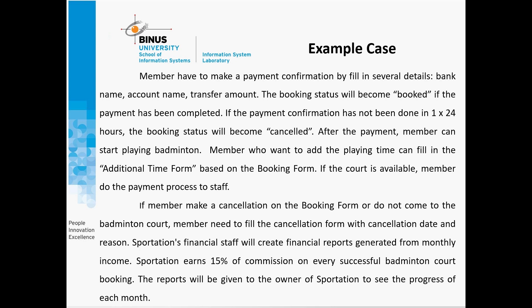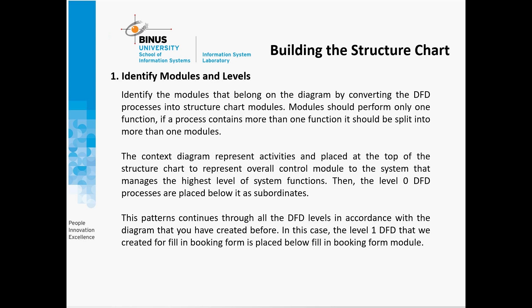The following is an example case of a support session. There are three steps to building a structure chart. First, identify modules and levels — identify the modules that belong on the diagram by converting the data flow diagram processes into structure chart modules. Modules should perform only one function. If a process contains more than one function, it should be split into more than one module.